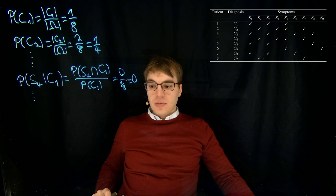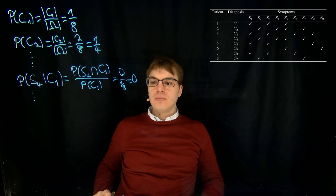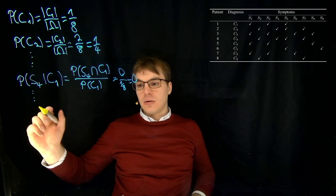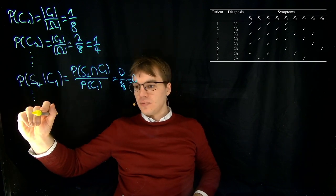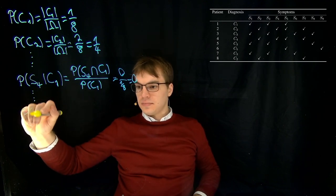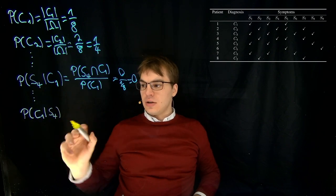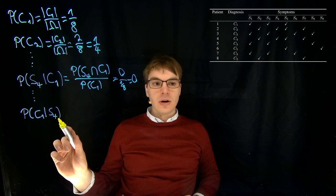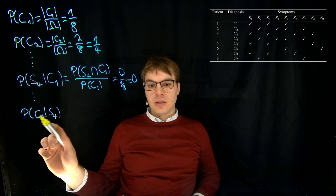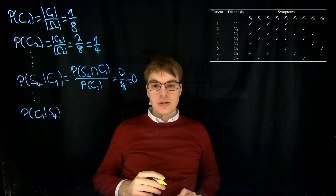And the next step then is to apply two rules from probability in order to compute our posterior probabilities. And these are C1 under the condition S4. So imagine you observe the symptom S4. What is the probability that the patient really indeed has the disease C1?